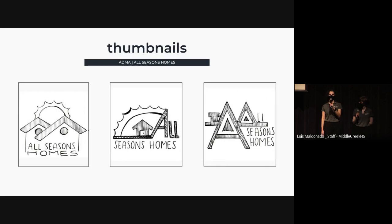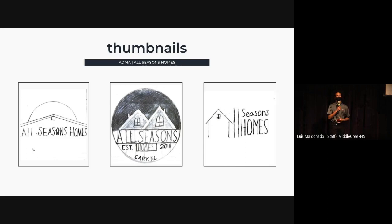From my initial sketches, I tried different roof pitches, angles, and different positions of the sun. I focused on simplicity with my logos since Ms. Hutchinson wanted a versatile design that could be utilized in multiple different ways. I also focused on image and text logos so that the company name could be clearly seen alongside the design. My goal when creating my thumbnails was to be as simple as possible while also including as much detail as I can. To do this, I added roof pitches in all of my designs to help consumers understand that All Seasons Homes works in real estate.